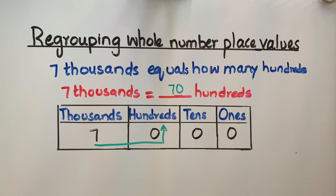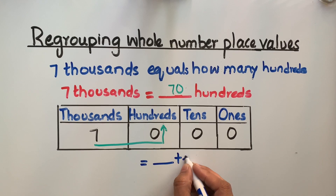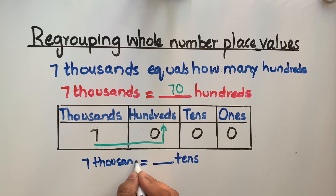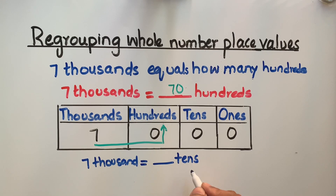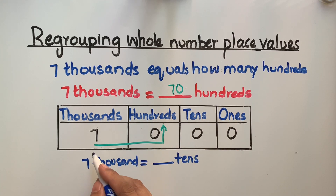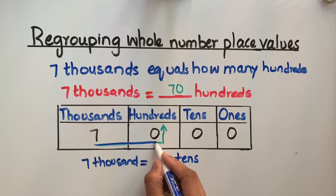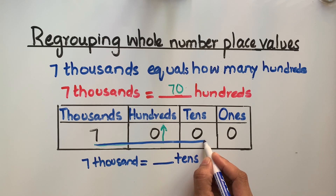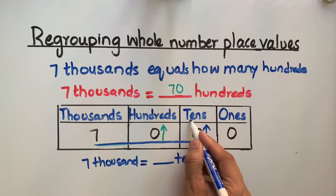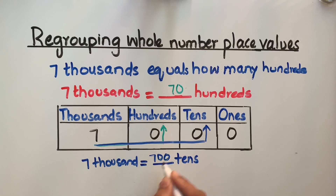Suppose we also have to find out how many tens we have in seven thousand. In this case, our target will be the tens column. Read this number from the left and up to the tens column. Seven with two zeros is seven hundred. Seven hundred tens is equal to seven thousand.